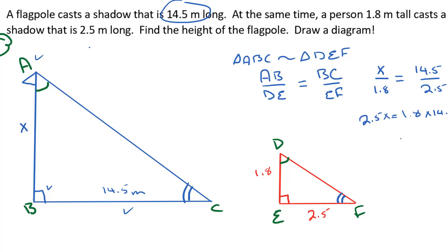Now all we need to do is punch some stuff in our calculators, isolate X, and solve. When we cross multiply, we get 2.5X equals 1.8 times 14.5, which equals 26.1. Now if we divide both sides by 2.5, we'll be able to isolate X and solve for the height of the flagpole. So the flagpole is going to be 10.44 meters tall.